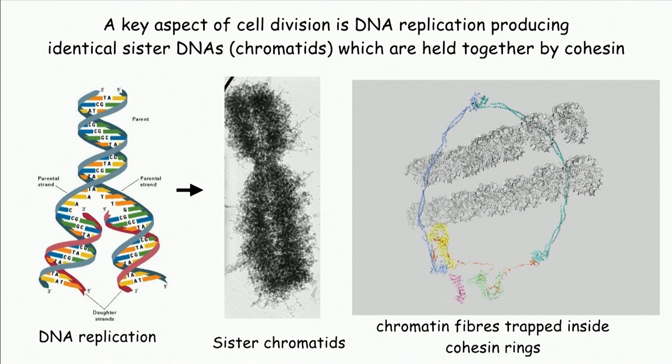Cohesin forms a giant ring structure which we believe acts as a topological device. The award I received yesterday was for identifying the mechanism by which the cell breaks open that ring and allows those sister DNAs to go to opposite poles of the cell. But there is a deeper problem which we still don't understand.